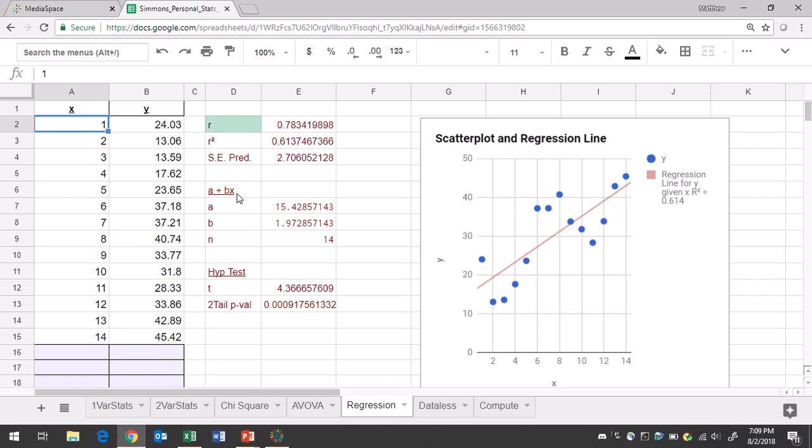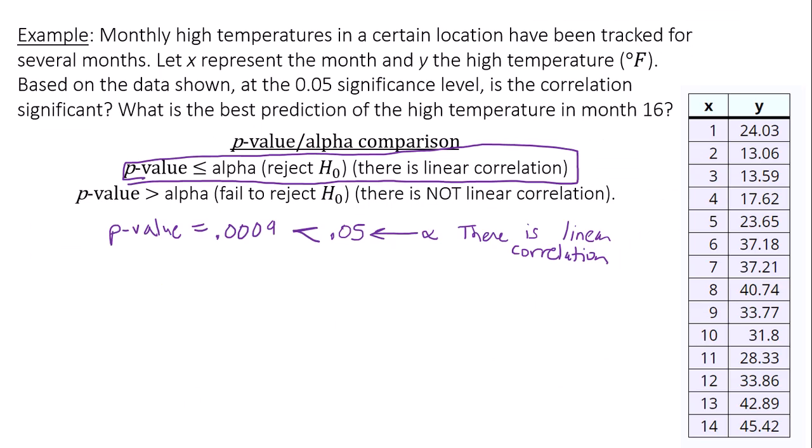So the equation is going to be Y, or you can use Y-hat because this is an equation that's used for predictions. Hats mean we're predicting. Y-hat equals 1.97x plus 15.43.